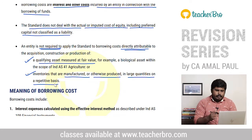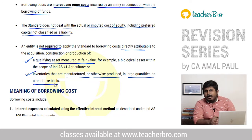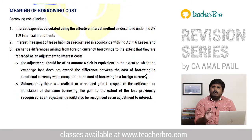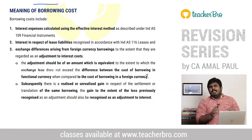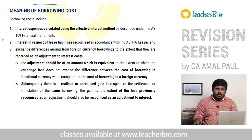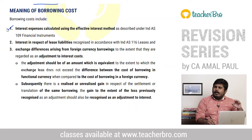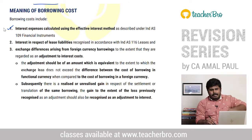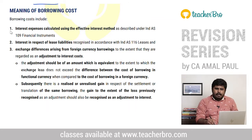This is the meaning of borrowing cost. For borrowing cost components, there are 3 main components, and then next two components are the same as well. So in total there are 5 components of borrowing cost under Ind AS 23.